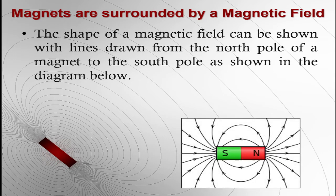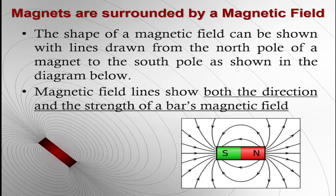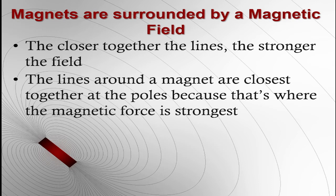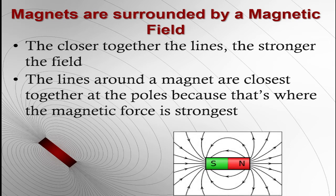When the magnet is surrounded by the magnetic field, the shape of the magnetic field can be seen here, where your north pole and south pole are present. The lines of the magnet show both the direction and strength of the magnetic field. The closer together the lines, the stronger the field, whereas the lines around a magnet are closest together at the poles, because that is where the magnetic force is strongest.